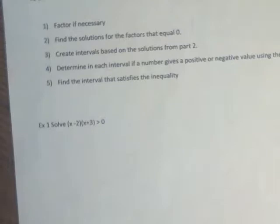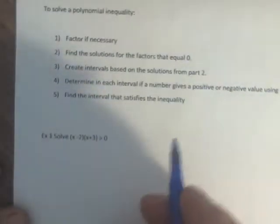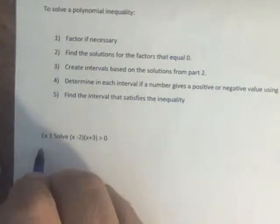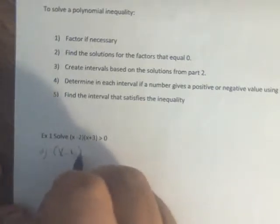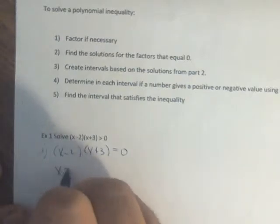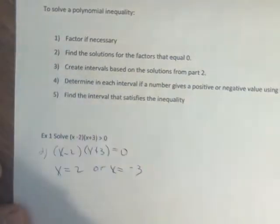Let's look at an example. This first one is already factored, so step one is done. Step two: I'm going to solve x minus 2 times x plus 3 equals 0. So x is 2, or x is negative 3.